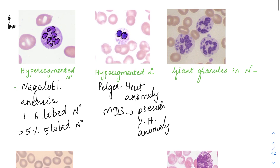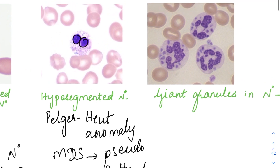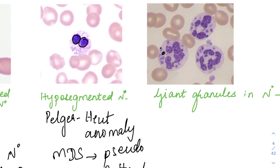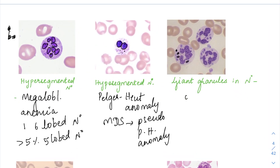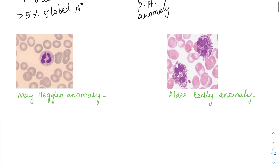In the third image, we are seeing giant granules in the neutrophils — look at the size of the granules; they are quite big. These kinds of giant granules in neutrophils are seen in Chediak-Higashi syndrome, which we had discussed earlier as well. In Chediak-Higashi syndrome, you are going to have giant granules in neutrophils.